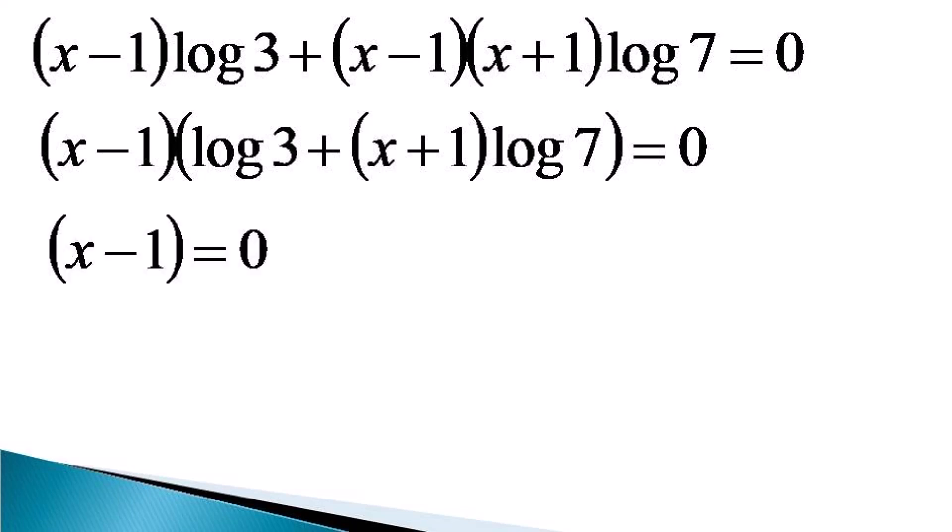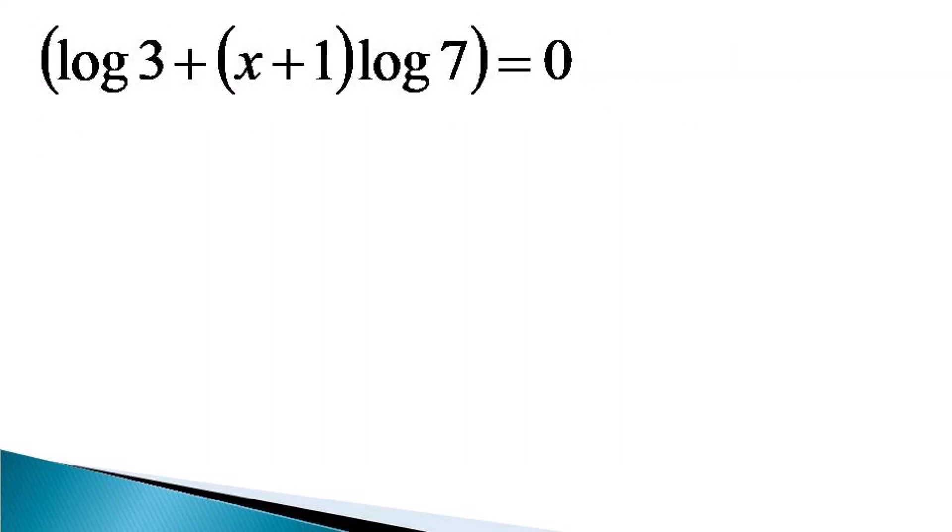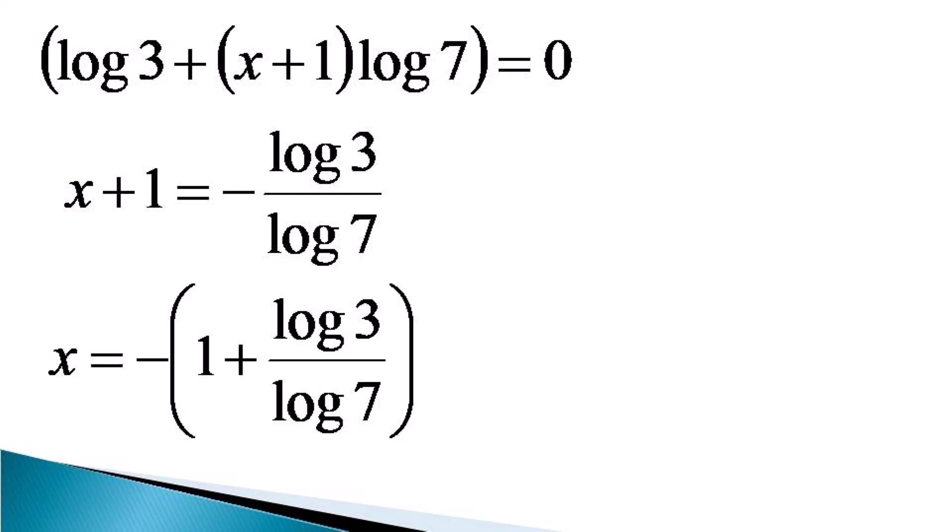The first solution is x minus 1 is equal to 0 which gives x is equal to 1. And for the second solution, log 3 plus x plus 1 into log 7 must be equal to 0, which gives x plus 1 is equal to minus log 3 by log 7. We take one also on the right hand side to get x is equal to minus 1 plus log 3 by log 7.